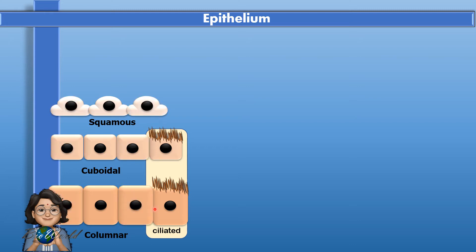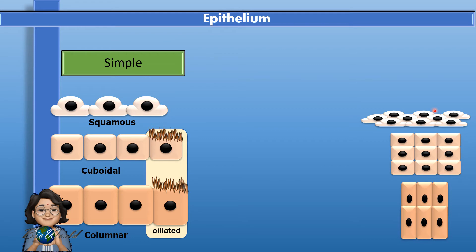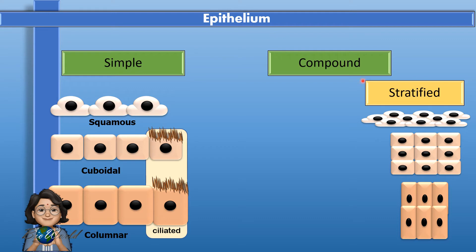The squamous, cuboidal, and columnar epithelial cells that are single-layered are called simple epithelium. There are some organs that require multi-layered epithelial cells. Those that are multi-layered are called compound epithelium, or more specifically stratified epithelial tissue. These are called stratified squamous epithelial tissue, stratified cuboidal epithelial tissue, and stratified columnar epithelial tissue.